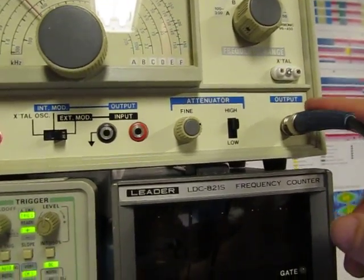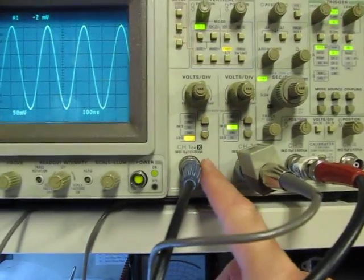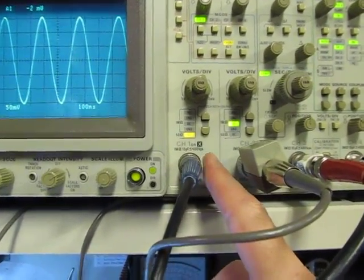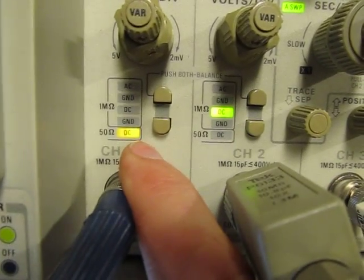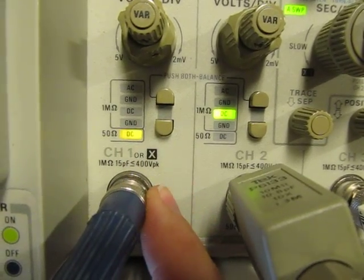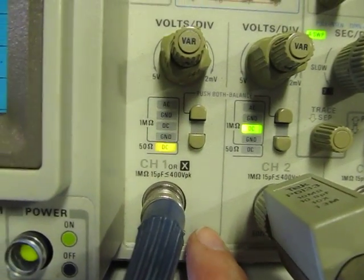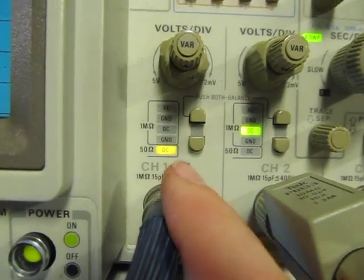What that means is that the amplitude that you get is going to be a function of the load you place on it. And especially with an RF signal generator, in general they're expecting to see a 50-ohm termination with the signal.